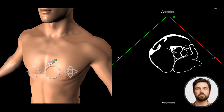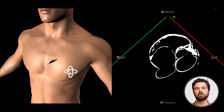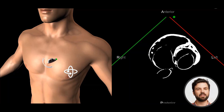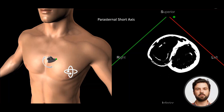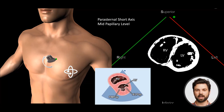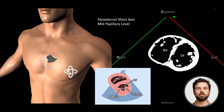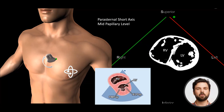We now need to get to the mid-papillary short axis view. This is done by fanning the transducer towards the apex of the left ventricle. The ultrasound beam will now cut the left ventricle through the papillary muscles.